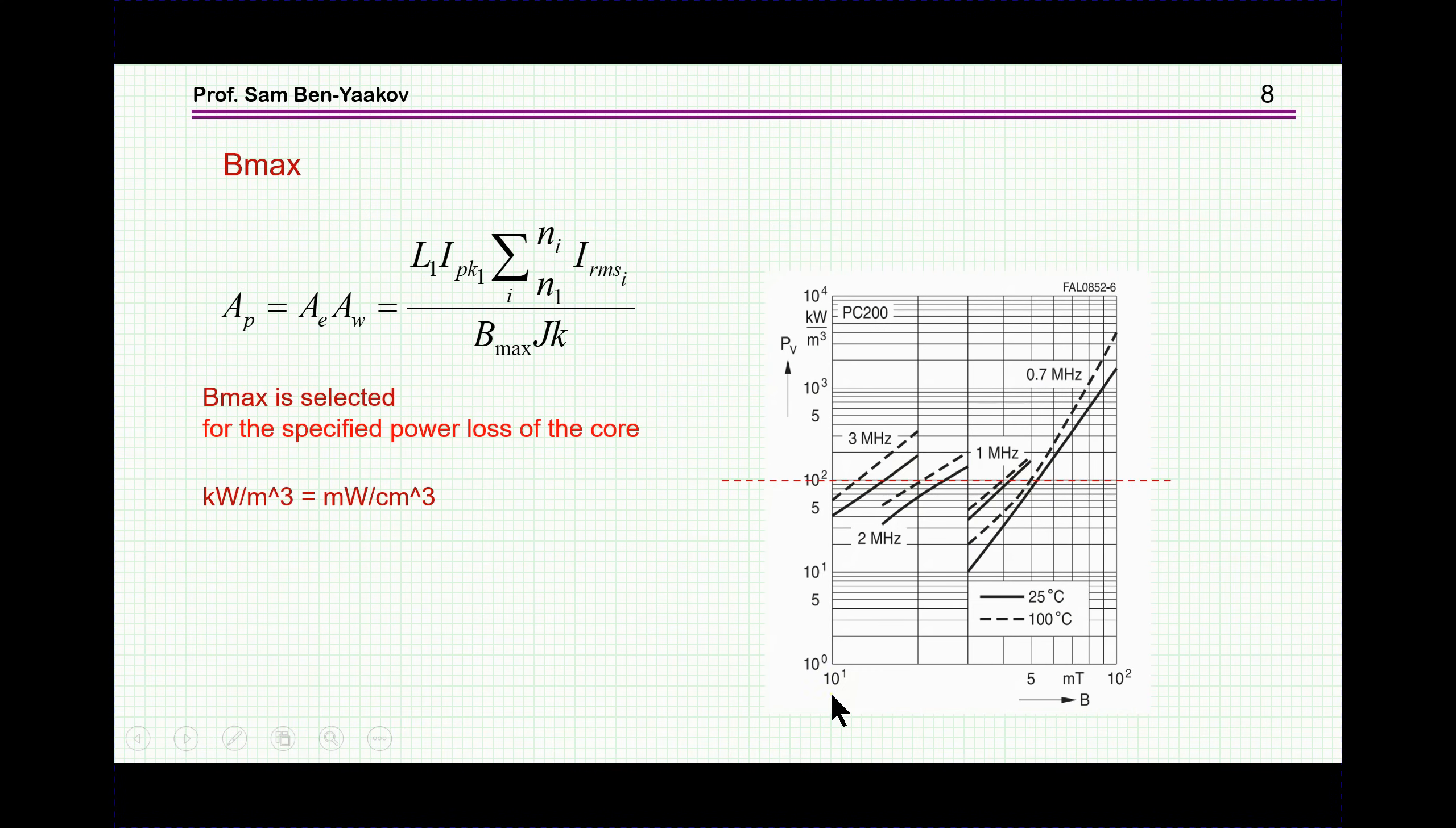This is actually a parameter that allows one to select a core. You can go to a catalog, a datasheet, and find out what is a core size that will meet the specific requirement for your converter. Let's have a look at this expression and see how does it relate to frequency, which is the subject matter of this presentation. I_peak and etc. are related to the design of the converter, the power level, voltage, turns ratio. So if I design the converter to one frequency or another, these will not change.